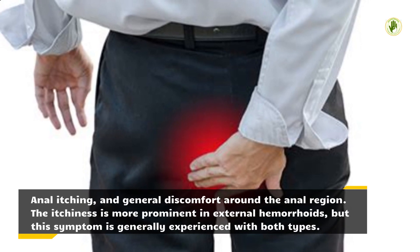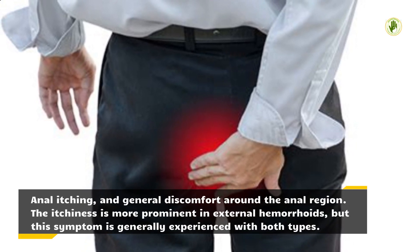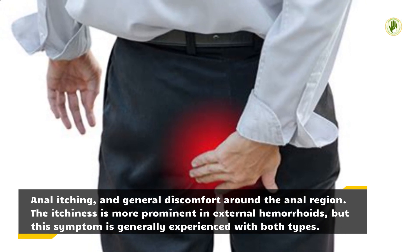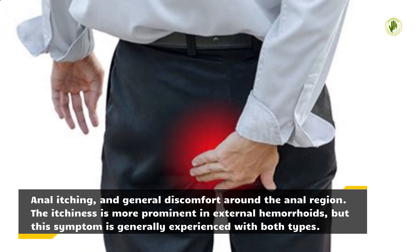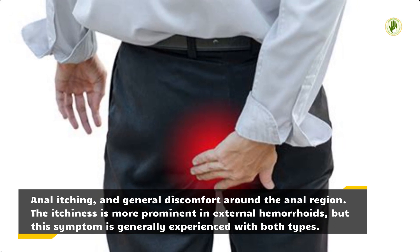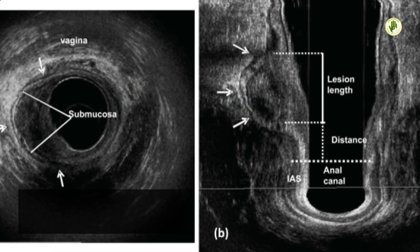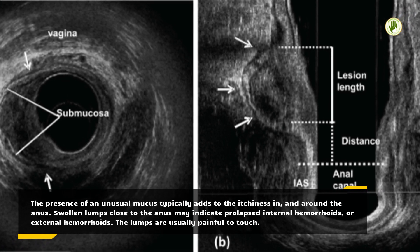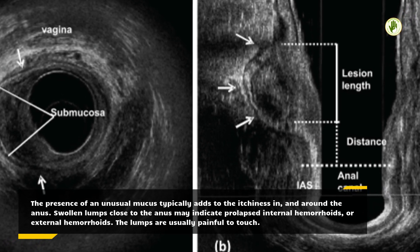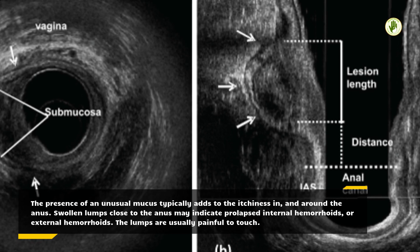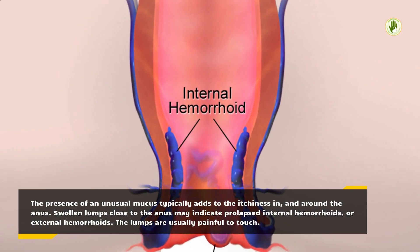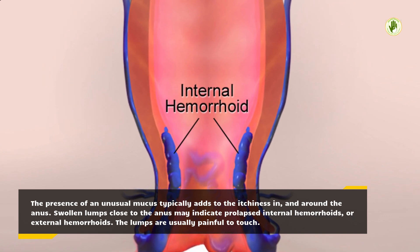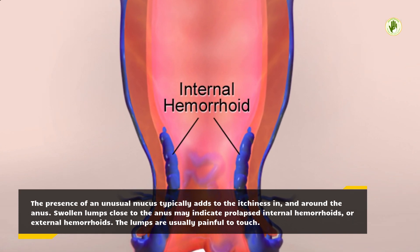Anal itching and general discomfort around the anal region. The itchiness is more prominent in external hemorrhoids, but this symptom is generally experienced with both types. The presence of an unusual mucus typically adds to the itchiness in and around the anus. Swollen lumps close to the anus may indicate prolapsed internal hemorrhoids or external hemorrhoids, and the lumps are usually painful to touch.